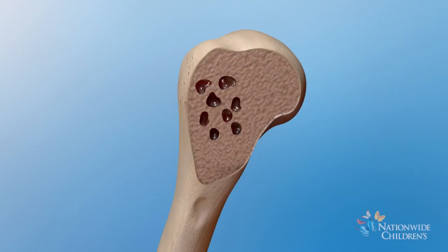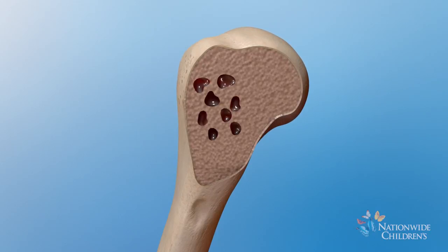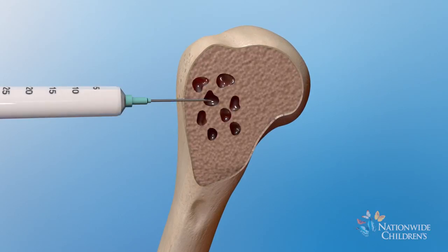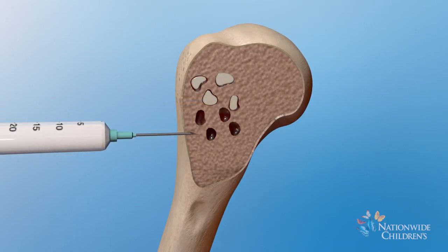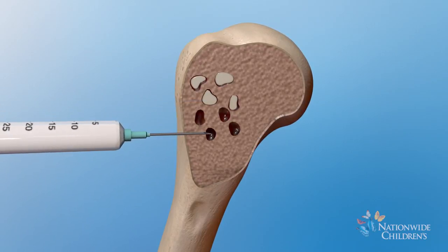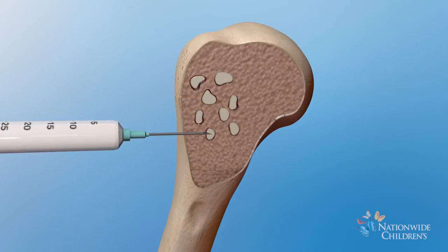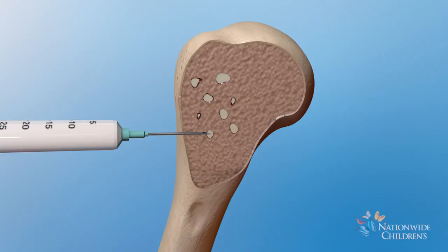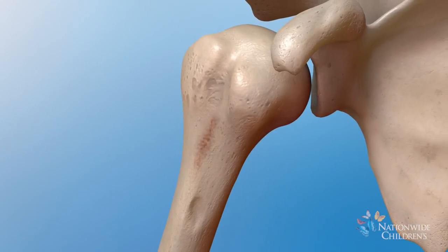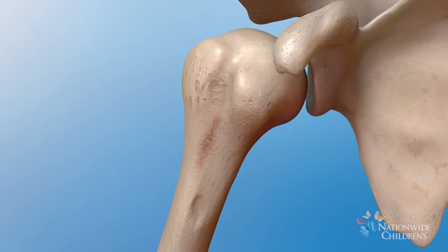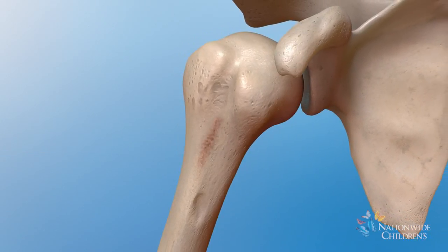The healing tumor forms a honeycomb of multiple spaces separated by walls of new bone. As a result, it's important to spread the drug into each space for the tumor to heal completely. Over time, the tumor heals, leaving a scar in solid bone.